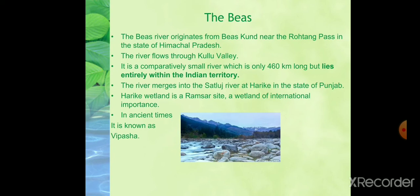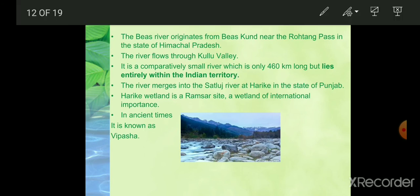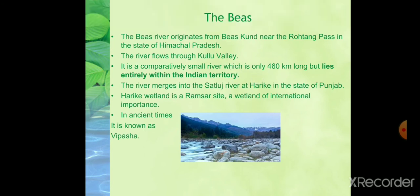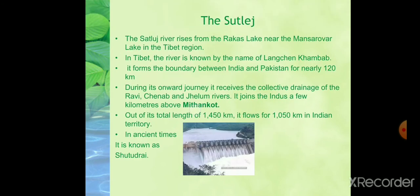Next is the Beas river. The Beas originates from Beas Kund near the Rohtang Pass in the state of Himachal Pradesh. The river flows through the Kullu valley and forms a gorge at Kati and Largi in the Dhauladhar range. It is comparatively very small, only 460 kilometers long, and lies entirely in Indian territory. The river merges into the Sutlej at Harike in Punjab, which is a Ramsar site — a wetland of international importance. In ancient times it was known as Vipasha.